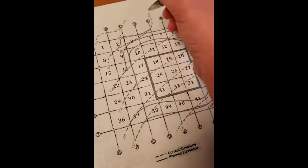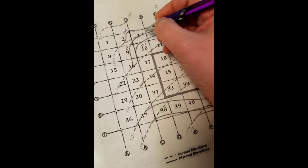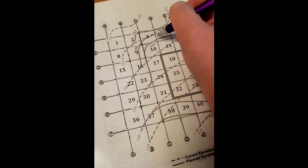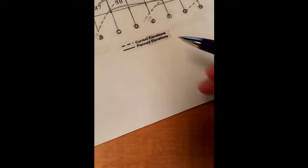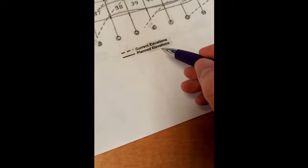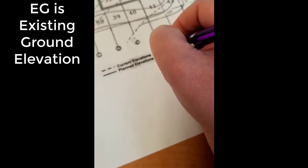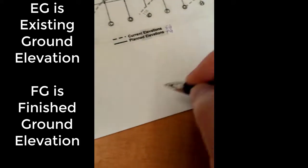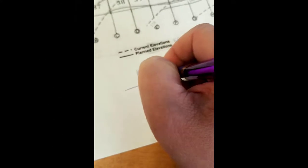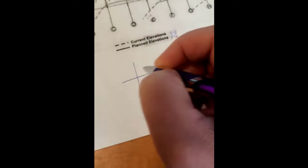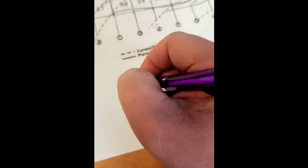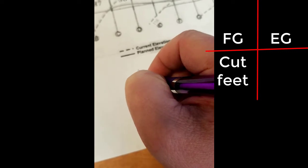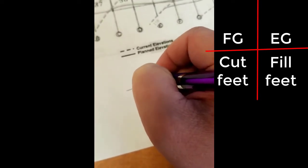So I'm going to show you grid three. What we need to do is write numbers in each corner that tell us what the current elevation is going to be. Current elevation is called existing ground and the planned elevation is called finished ground. So you have this intersection of the grid lines. You want to put the finished ground elevation on that corner and the existing ground there.